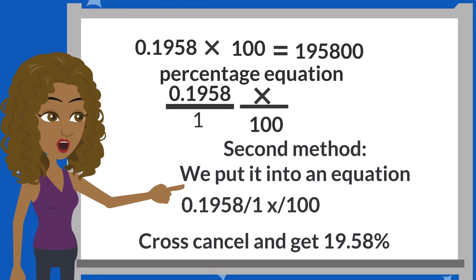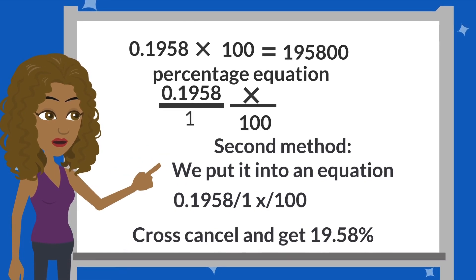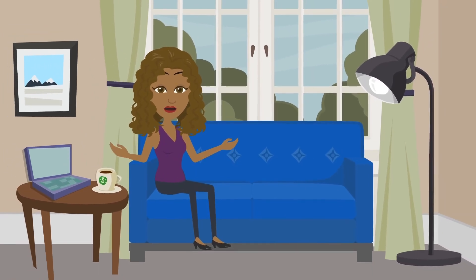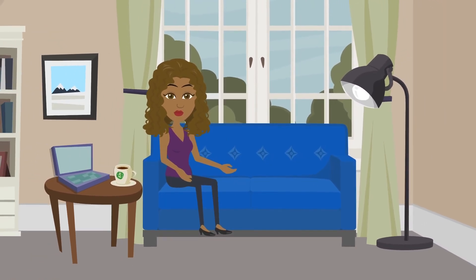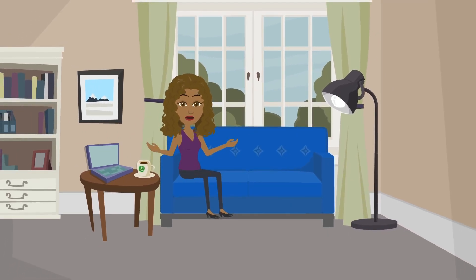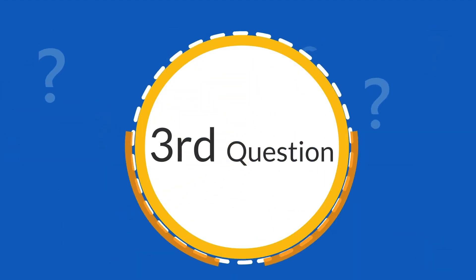It equals to x over 100, and 0.1958 will be over one. The shortcut that I taught you is very easy to remember. It's basically like the first question: moving the decimal place a few places to the right after you times it by 100. That's the second way to doing that problem. Hopefully you'll let me know which method you prefer.